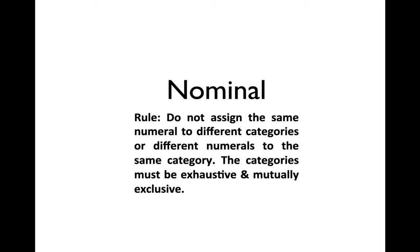Nominal data covers things like chocolate, vanilla, and strawberry flavors, or different types of political parties. If you're measuring gender or sexual orientation — understood theoretically as a continuum — for survey purposes these are usually treated as different categories not put into a rank order. Any yes/no question would be nominal. If you're asking what province someone lives in, that's also nominal — they're just different categories.